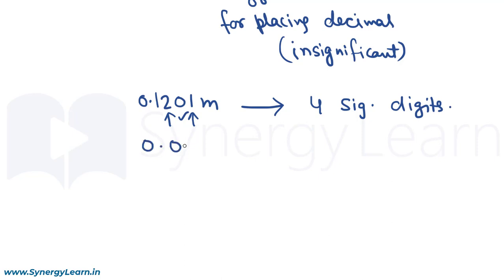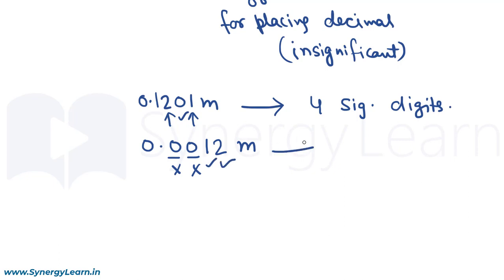But if the measurement is 0.0012 meter, then the first two zeros have come for placing the decimal and therefore are insignificant. Whereas 1 and 2 are significant. So this measurement has two significant digits.